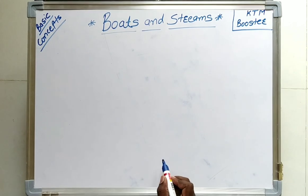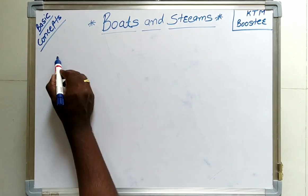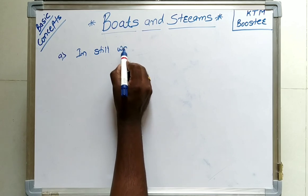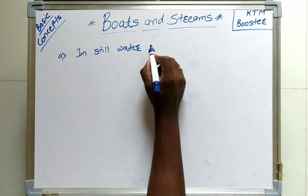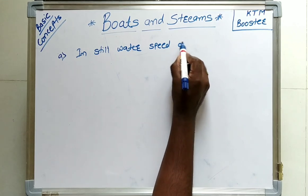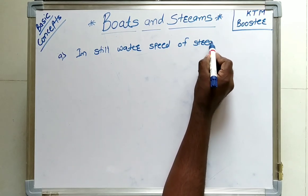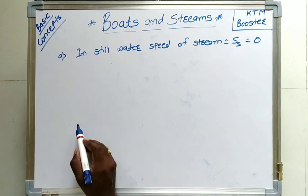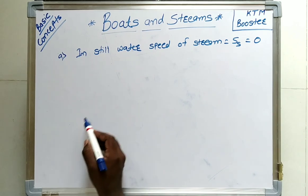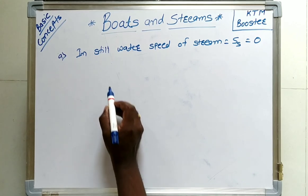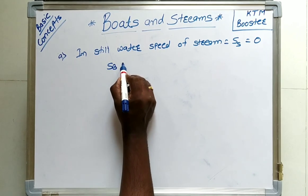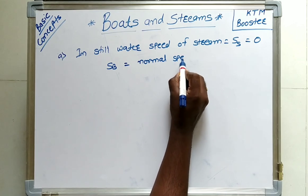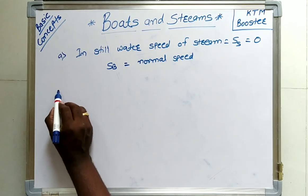Now we have some considerations for boats and streams. In still water, the speed of stream SS is equal to zero, which means the speed of boat equals its normal speed.